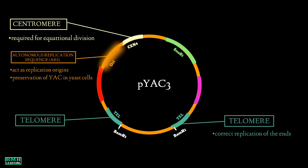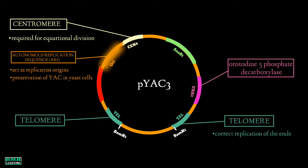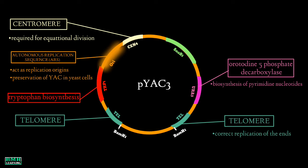There are also various selectable markers which allow for differential selection of transformed colonies. These include the URA3 gene, which codes for orotidine-5'-phosphate decarboxylase — an enzyme involved in the biosynthesis of pyrimidine nucleotides. The next selectable marker is TRP1, a gene involved in tryptophan biosynthesis, located adjacent to a chromosomal origin of replication.